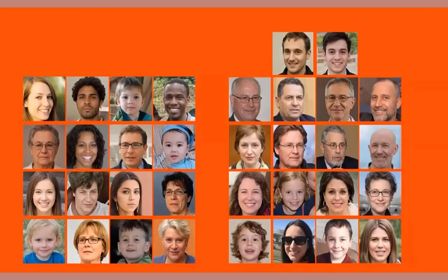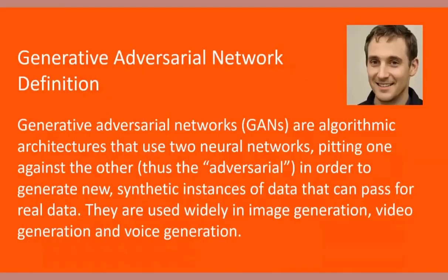All of these pictures were generated by computers and are not pictures of real people. Here's the definition of a Generative Adversarial Network: GANs are algorithmic architectures that use two neural networks pitting one against the other — thus the 'adversarial' — in order to generate new synthetic instances of data that can pass for real data. They are used widely in image generation, video generation, and voice generation.